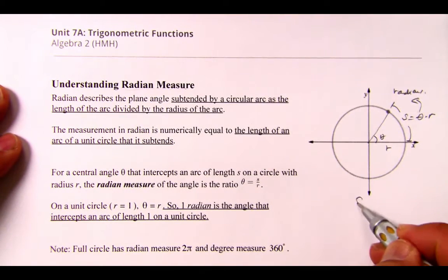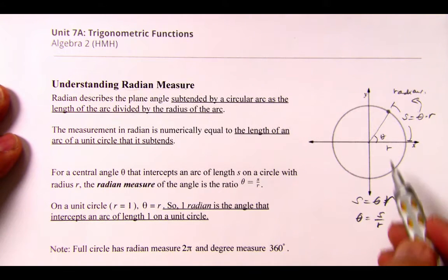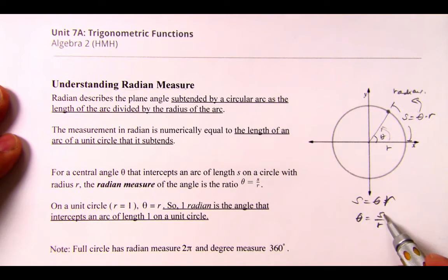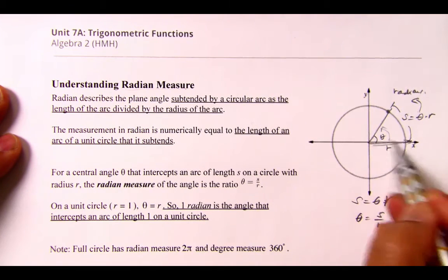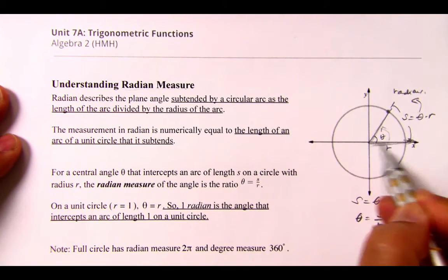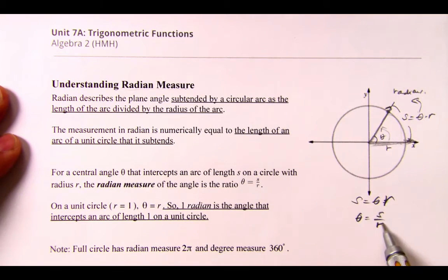So the radian measure, theta, in this angle right here, is the arc length created by the initial side and the terminal side. The arc length divided by the radius. Now, if you think about it, they both are unit lengths, and those units cancel out.